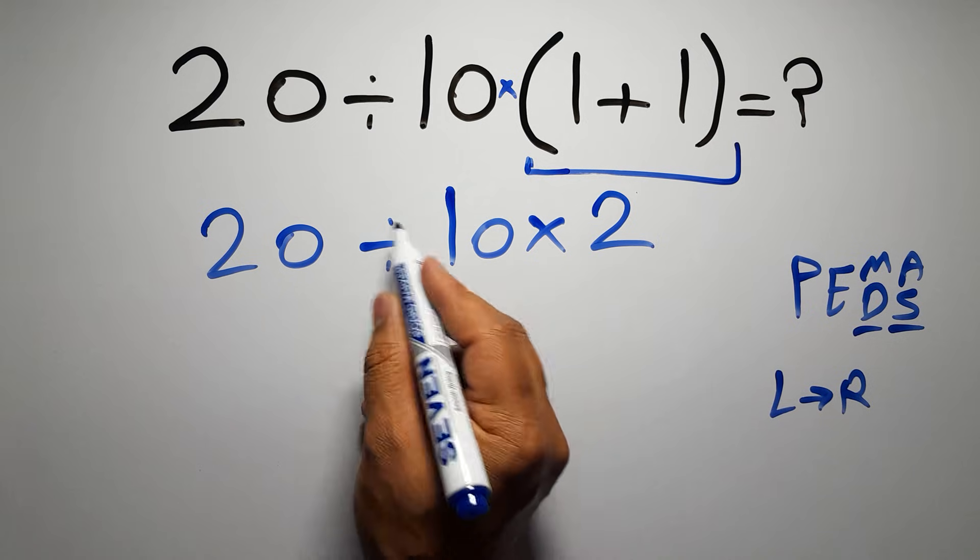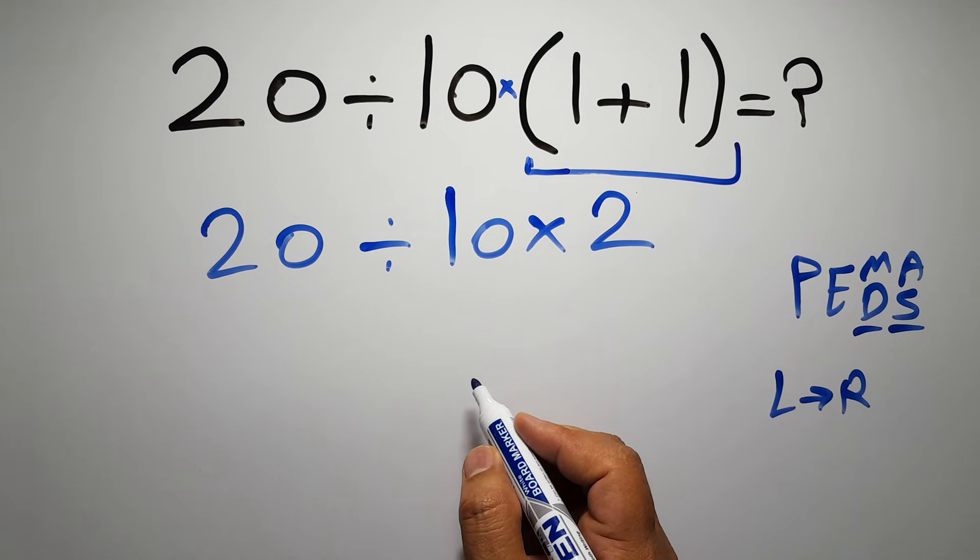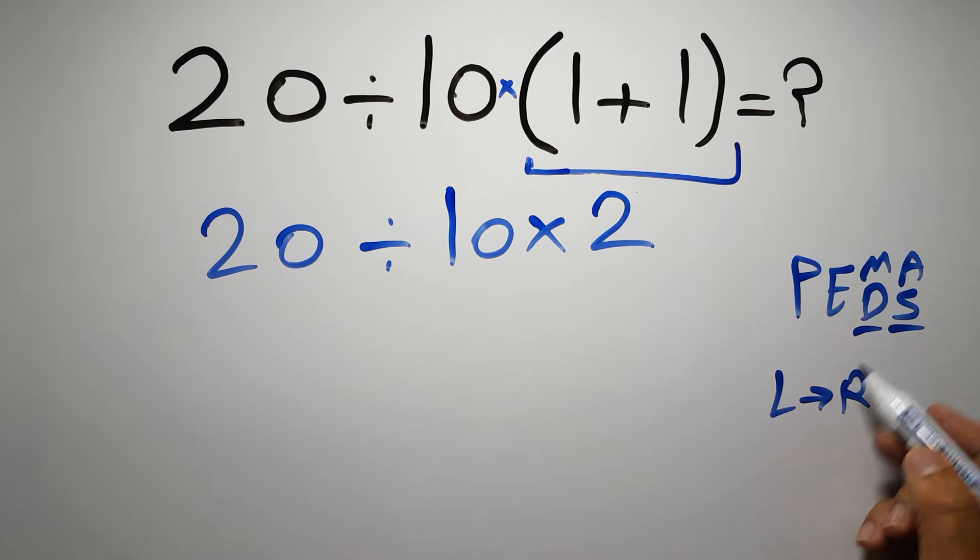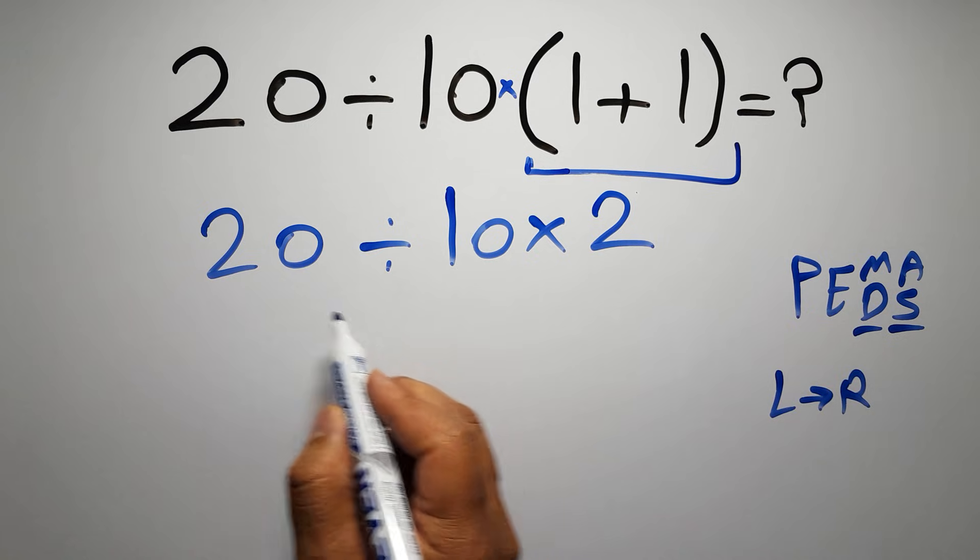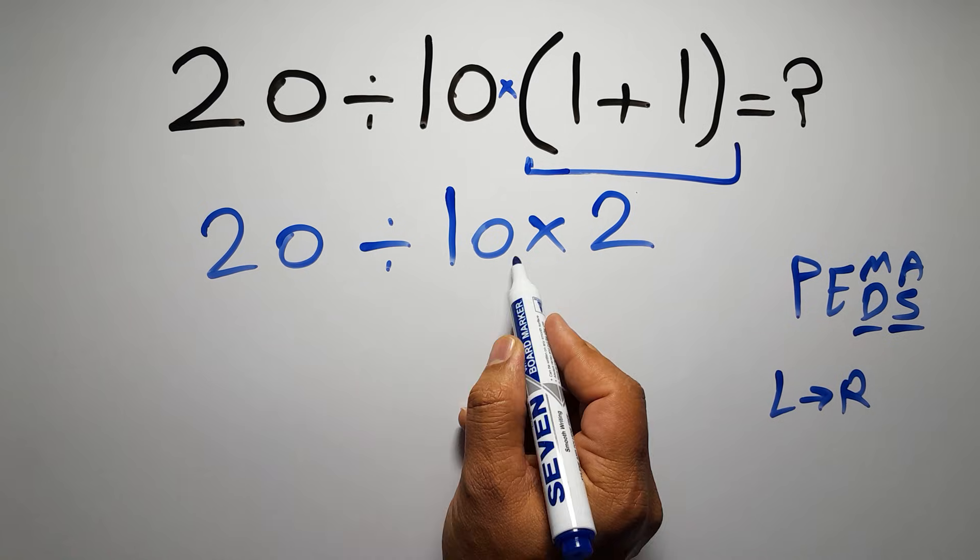Now we have 1 division and 1 multiplication. As I said, multiplication and division have equal priority and we have to work from left to right, so here first we have to do this division. 20 divided by 10 gives us 2.